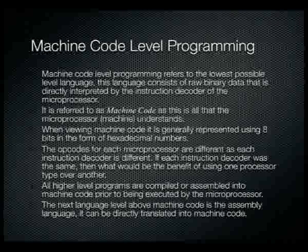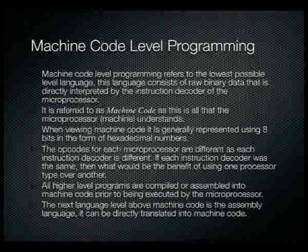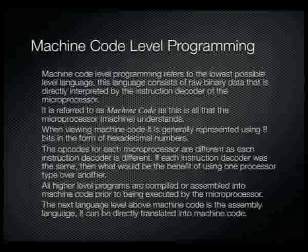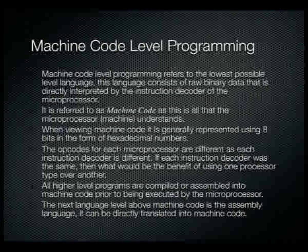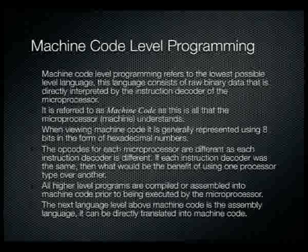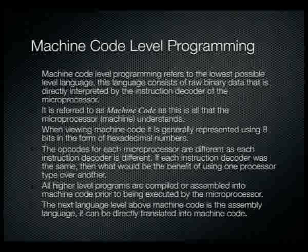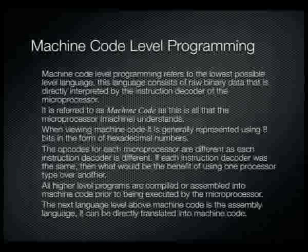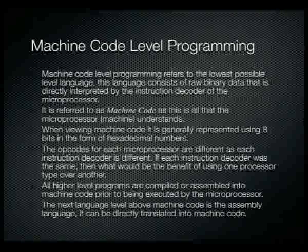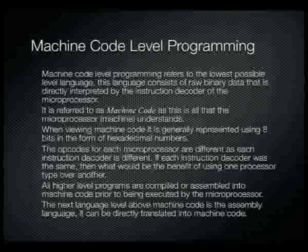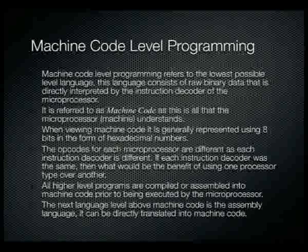The opcodes are different for each microprocessor because they have different instruction decoders. If every microprocessor had exactly the same instruction decoder, they'd be exactly the same. It is the instruction set that effectively sets each microprocessor apart, so we will have different instruction sets for each different microprocessor. Each instruction decoder is different because each microprocessor is different.